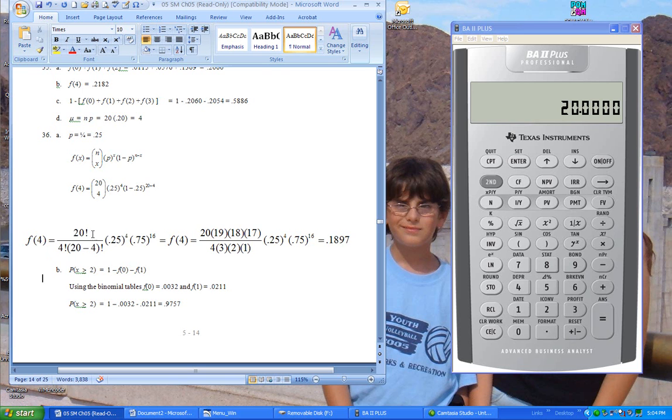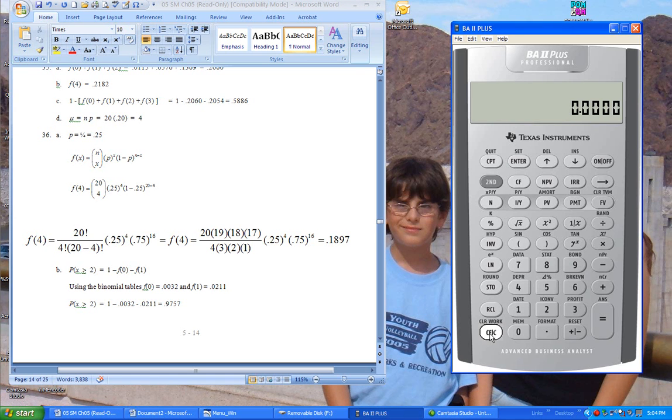So to perform this calculation right here, we can use our combination button to do this computation for this first term right here. So let me clear out, and the way we do this is we say 20, second function, combination, 4, equals, and 4,845 is the number of combinations. So that's this first term.